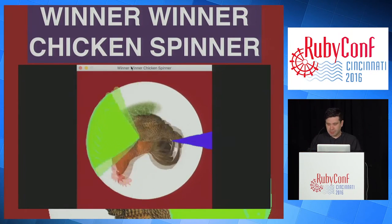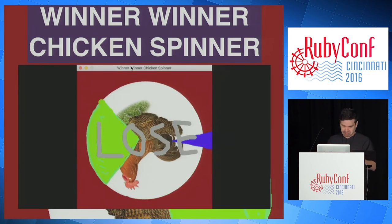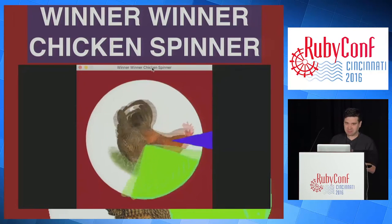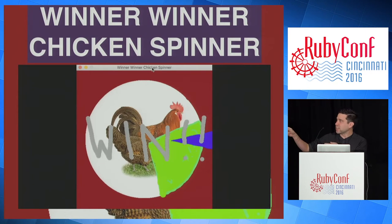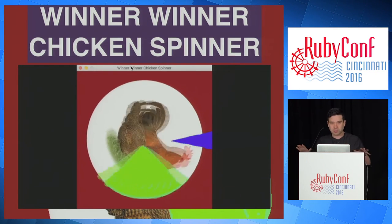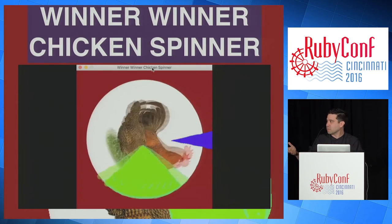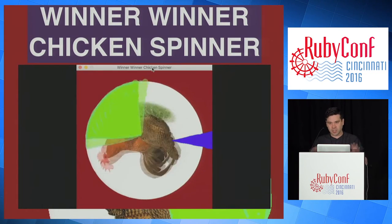To demonstrate these concepts, I wrote a really amazing game called Winner Winner Chicken Spinner. How this game works is the chicken spins until you press the space bar. When you press the space bar, the game ends. If he stops in the highlighted area, you win; if he stops outside the highlighted area, you lose.